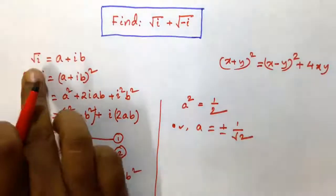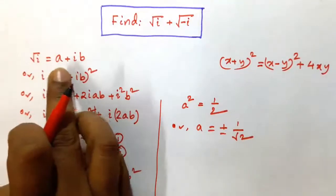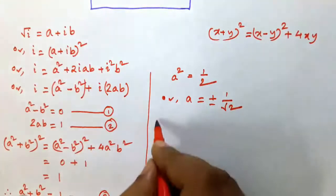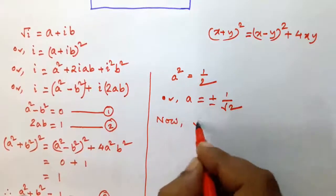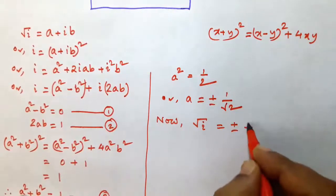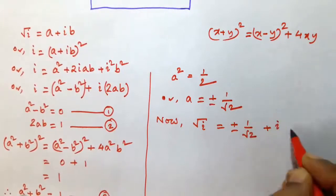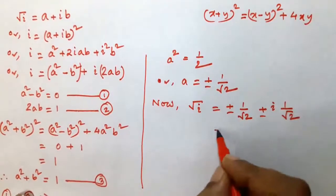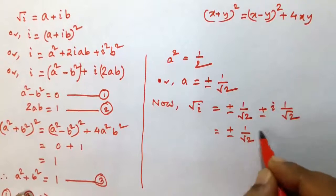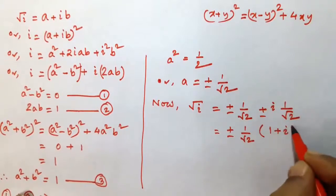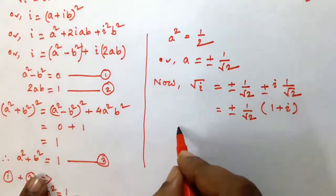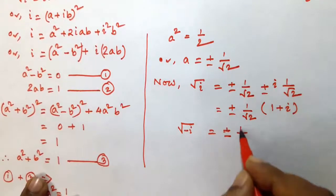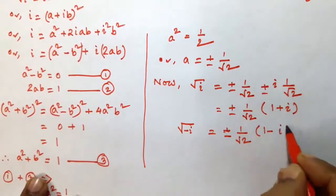Now, since root i is equal to a plus ib, putting the values of a and b, root i is equal to plus or minus 1 by root 2 plus i into 1 by root 2, which gives plus or minus 1 by root 2 into (1 plus i). Similarly, root minus i is equal to plus or minus 1 by root 2 into (1 minus i).